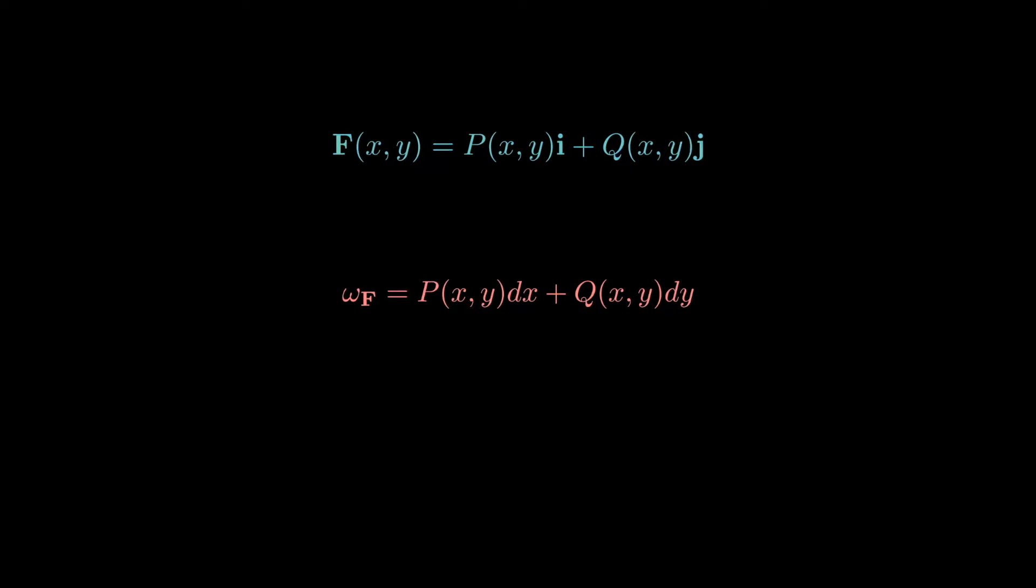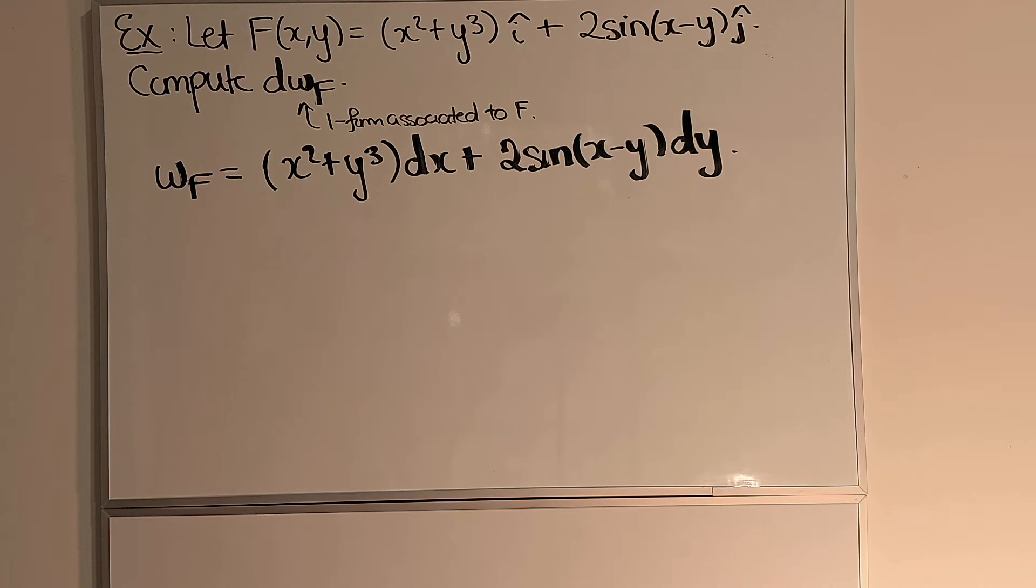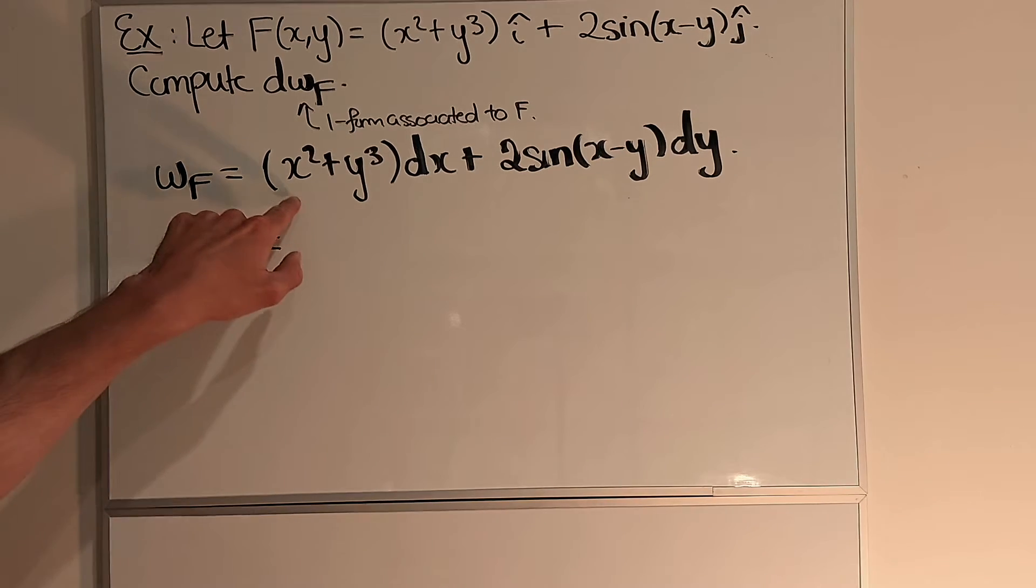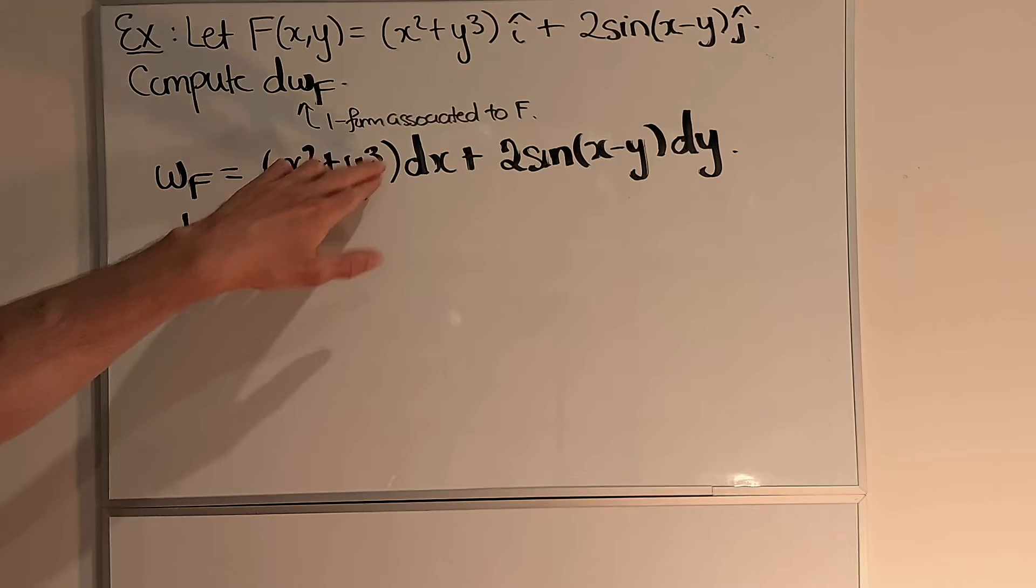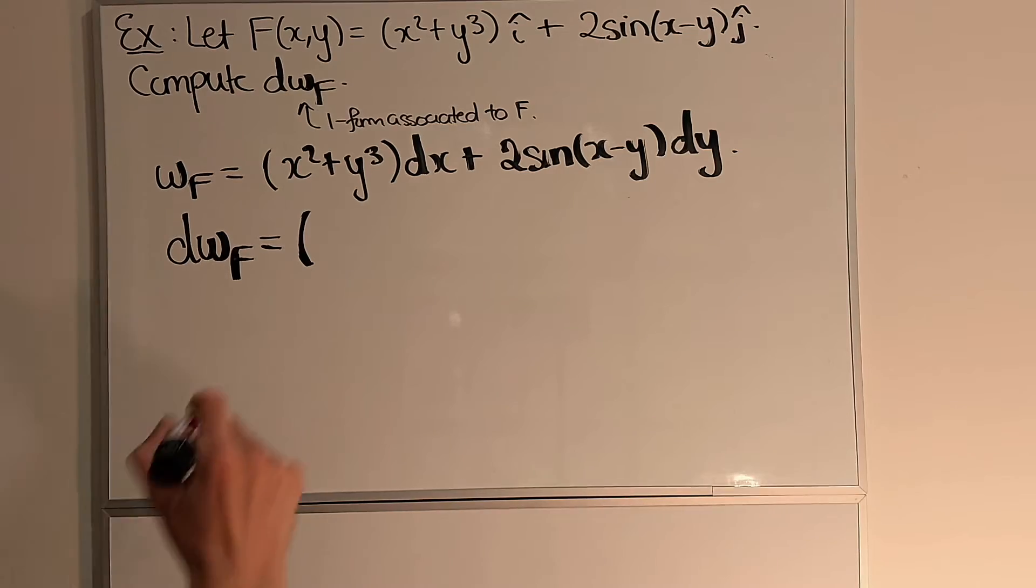This allows us to associate to any vector field a one-form, and similarly to any one-form a vector field. This defines a one-form and I can compute the exterior derivative. Recall that that's just given by computing the x partial derivative and then adding a dx, and then the y partial derivative and adding a dy. This is exactly what we see when we use implicit differentiation.